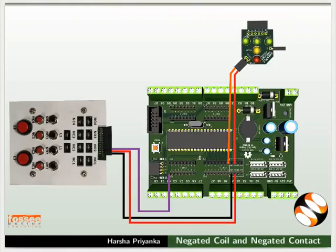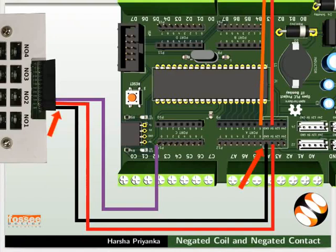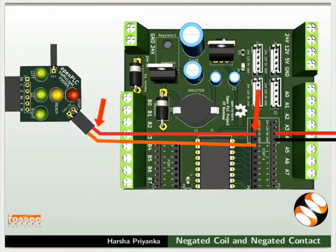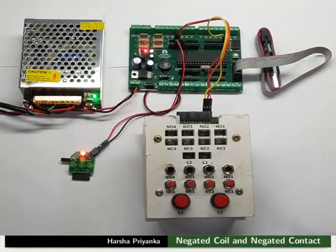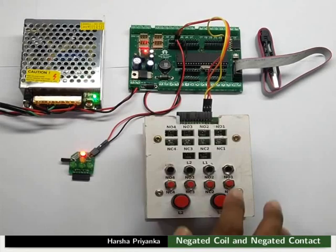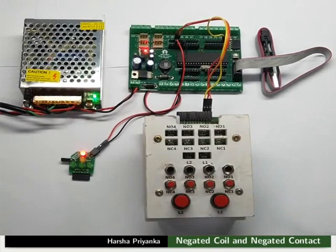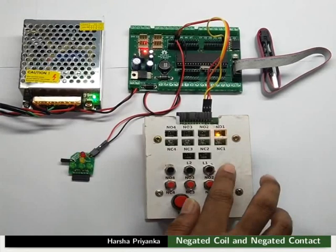Let us see the connection details now. Connect ground and 5 volts of the switchboard to ground and 5 volts of the mainboard respectively. Then connect NO1 of the switchboard to PC0 of the mainboard. Connect the +5V pin of the red LED of the Traffic Light Module to the 5V pin of the mainboard. Then connect the ground pin of the red LED to PA0 pin of the mainboard. Make the connections as shown in the picture. After making all the connections properly, turn on the power supply. We can observe that the LED glows even before the switch NO1 is pressed. The red LED turns off whenever NO1 is pressed — that is, the corresponding switch LED and the red LED glow alternately.